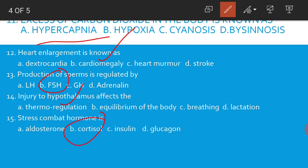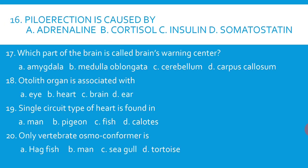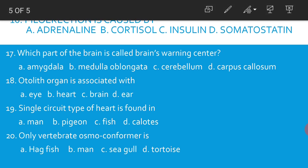Stress combat hormone is cortisol — this is a very important bit. Piloerection is caused by adrenaline. Which part of the brain is called the brain's warning center? Amygdala.